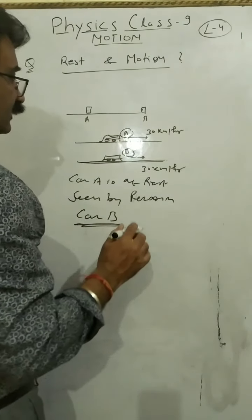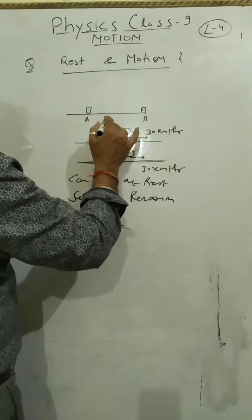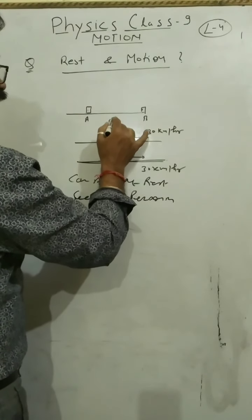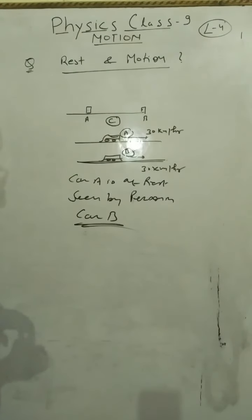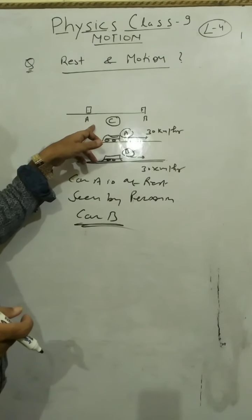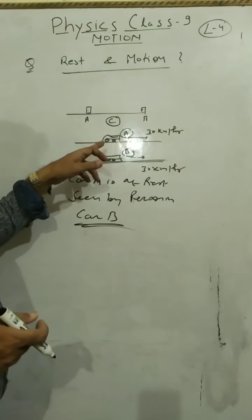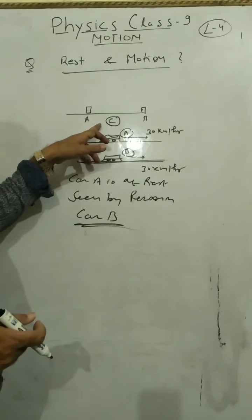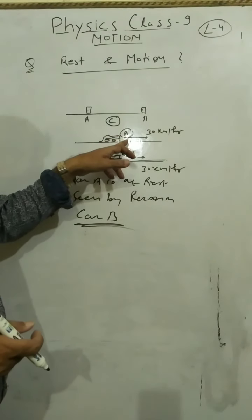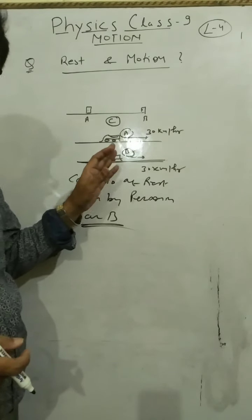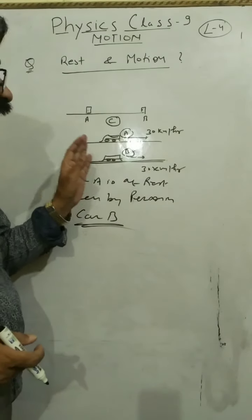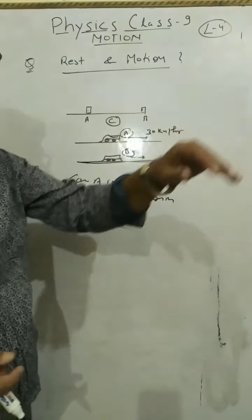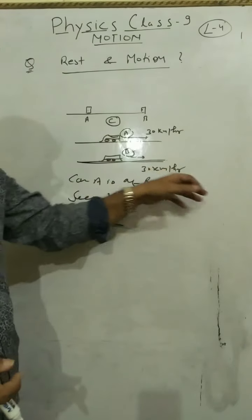But if another person who is standing there, person C, I ask him whether car A or B is moving. So he says yes, car A and car B both are moving with the same speed and going towards the left to him.